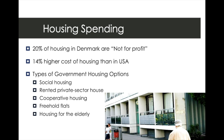20% of all housing in Denmark is considered not-for-profit. However, those that are not considered not-for-profit housing are usually costing about 14% higher than what they would in the United States. The types of housing recognized by the government include social housing — these not-for-profit housing units — rented private sector housing, cooperative housing similar to co-ops in the United States, freehold flats which are very private, and they also offer housing for the elderly, which falls into the Scandinavian social welfare model.